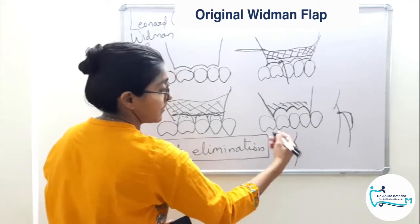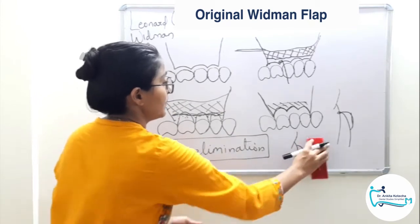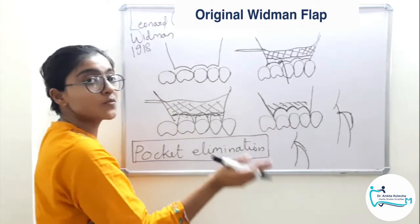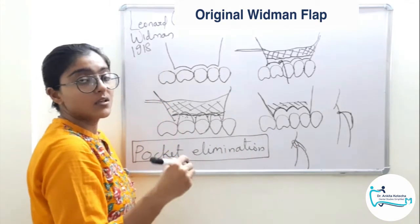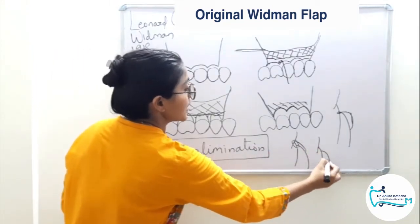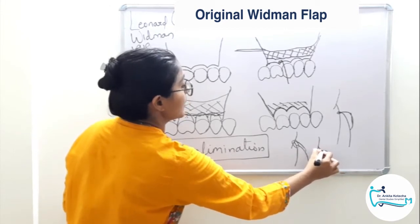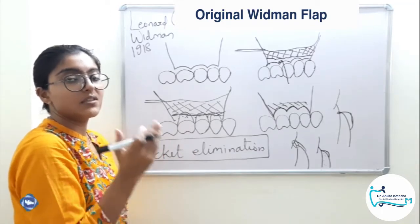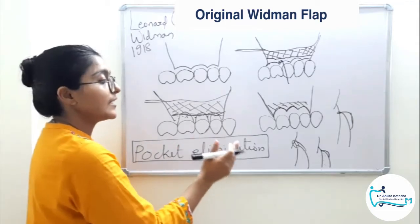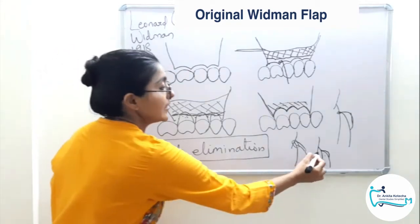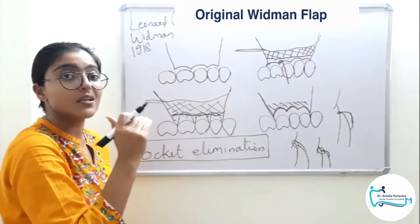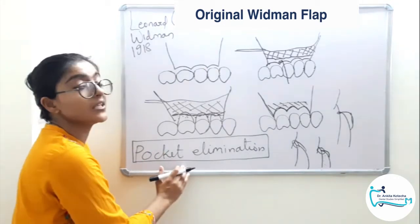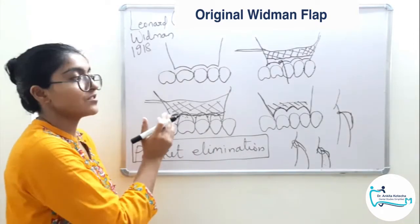There were two options: the flap could have been placed back at its original position, but in that case there would be scope of pocket formation postoperatively. Instead, Widman repositioned the flap after achieving the bony contour in such a manner that there is no space between the flap margin and the bone margin — both are placed at the same level. The flap margin and the crest of the alveolar bone are at the same level, and they are adapted and secured with interproximal sutures, leaving no scope for pocket formation. This is how pocket elimination is achieved by apical repositioning of the flaps, post-debridement and bone contouring.